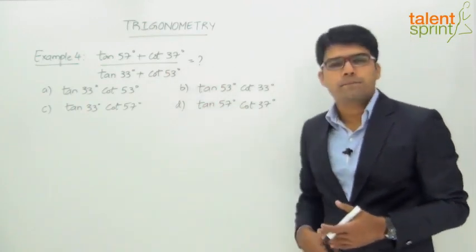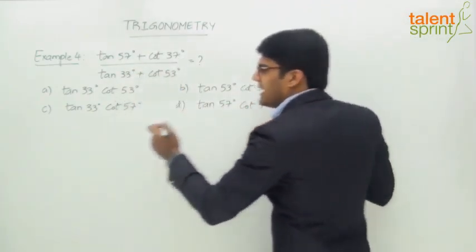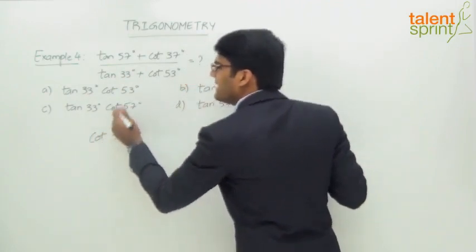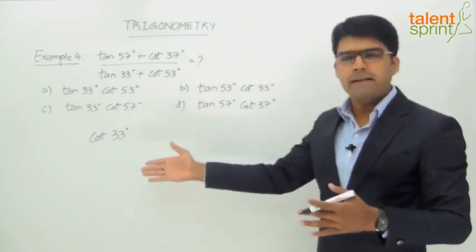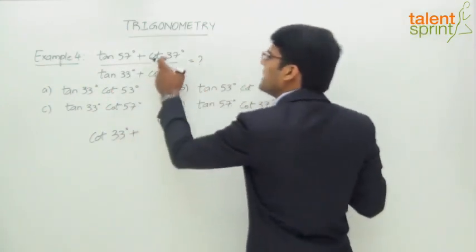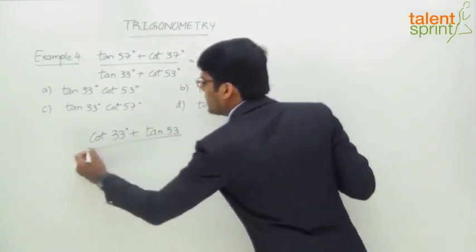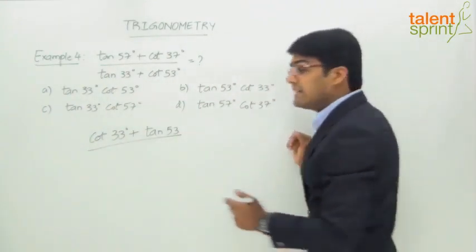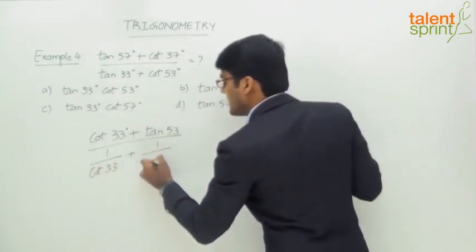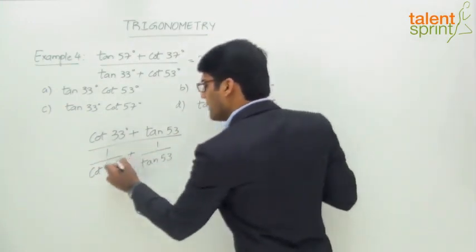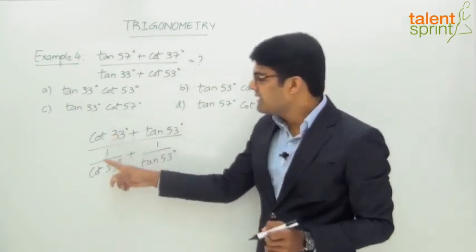Looking at the numerator: tan57 can be written as cot33, since tan(90 - 33) = cot33. Similarly, cot37 becomes tan53. In the denominator, tan33 can be expressed as 1/cot33, and cot53 can be taken as 1/tan53. The whole idea is to get matching trig ratios with the same angles in both numerator and denominator — cot33 with cot33, and tan53 with tan53.